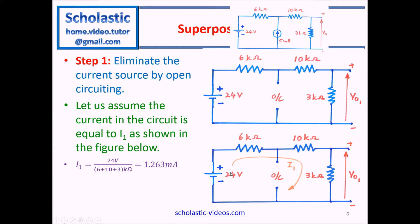To calculate I1, we apply Kirchhoff's Voltage Law. The total voltage is 24 volts, and dividing by the total resistance — 6 kΩ + 10 kΩ + 3 kΩ — gives the current. Multiply I1 by 3 kΩ to get the voltage drop across those terminals. V01 equals the current in milliamperes multiplied by 3 kΩ; the kilo and milli cancel, giving V01 = 3.789 volts across these two terminals.